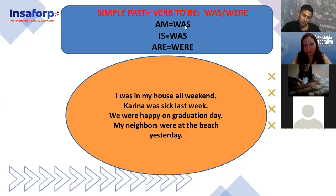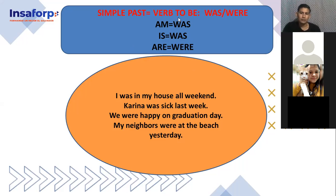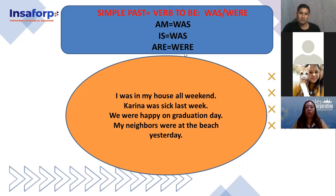Here's the equivalent: for first person, 'am' becomes 'was.' For third person — he, she, it — instead of 'is,' it's 'was.' For second person and plurals, 'are' becomes 'were': you were, we were, they were. So: I was, he was, she was, it was — and for plurals: we were, they were, you were. We need five volunteers to read example sentences — Juan number one, Azucena number two, Azucena number three, Cindy number four, Luz Clara number five.